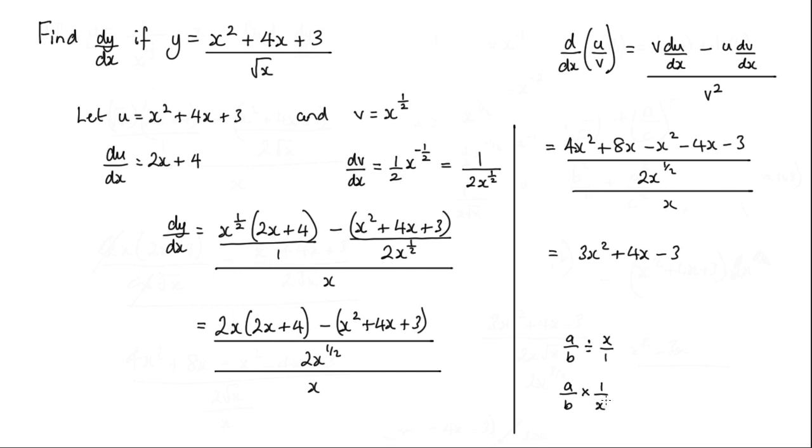So what's going to happen is we're going to multiply the denominator by x. So this denominator here is going to be multiplied by x. And when we multiply these, we just add the powers. Well, I've got a 1 here and a half here, so that will be 2x^(3/2).